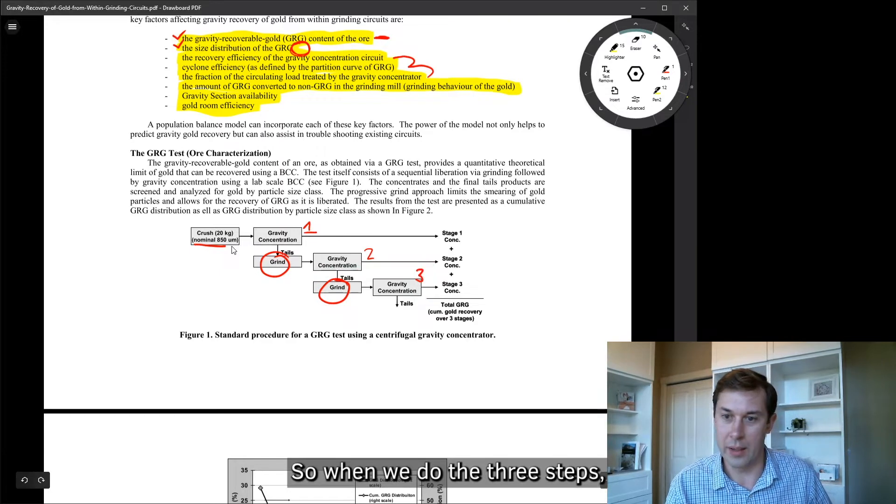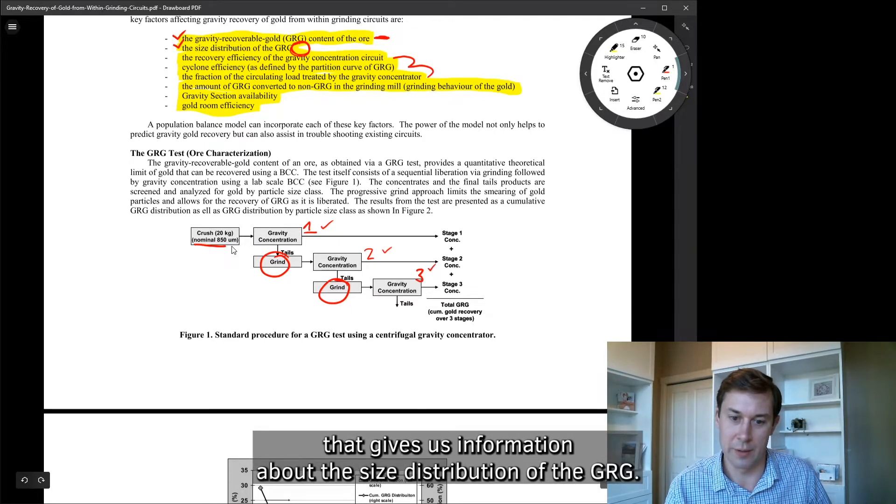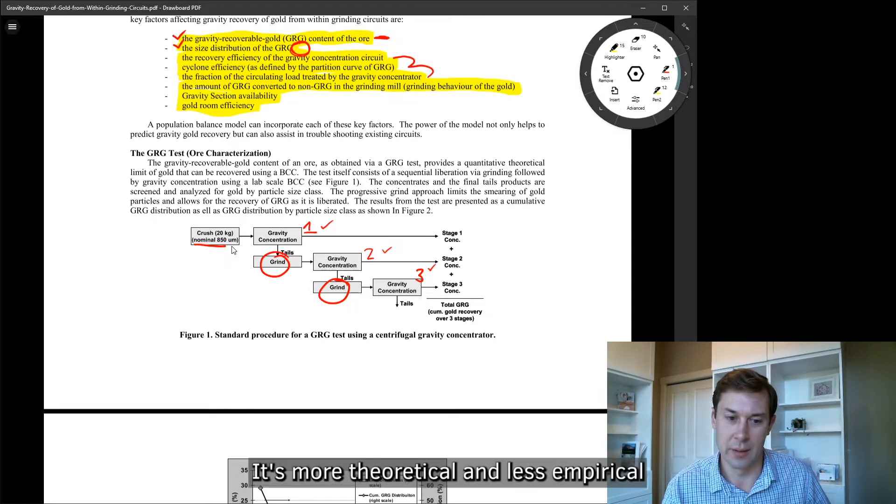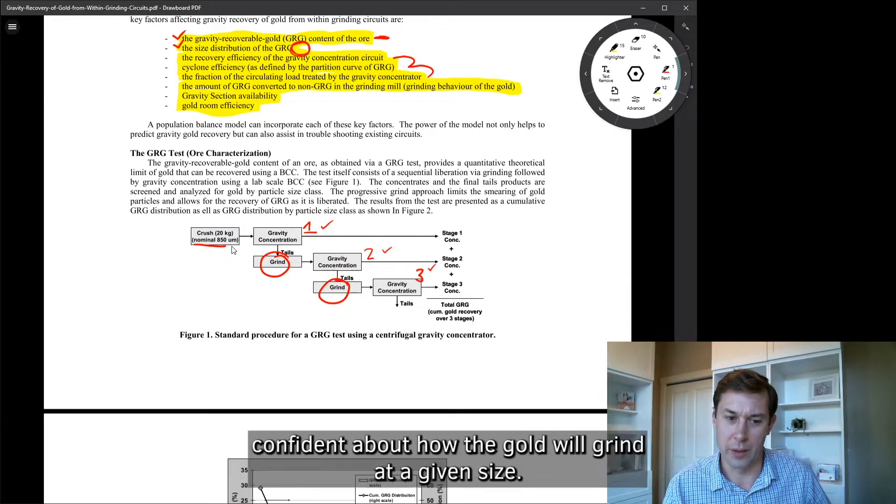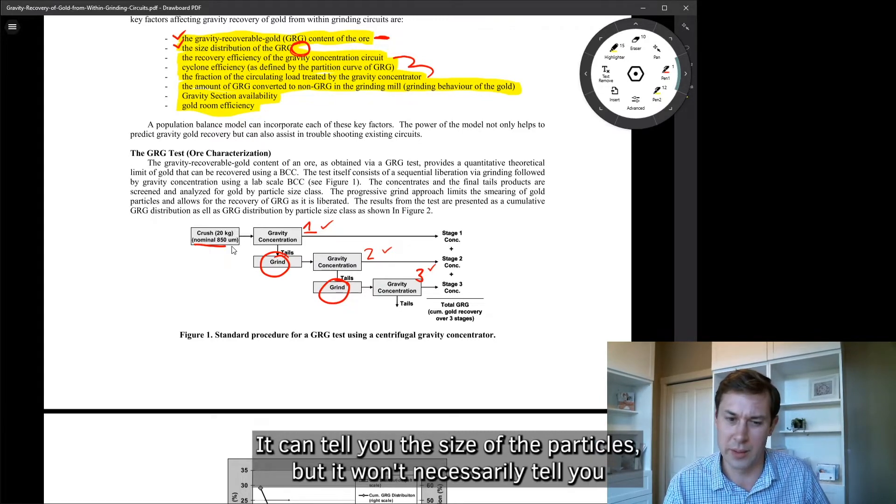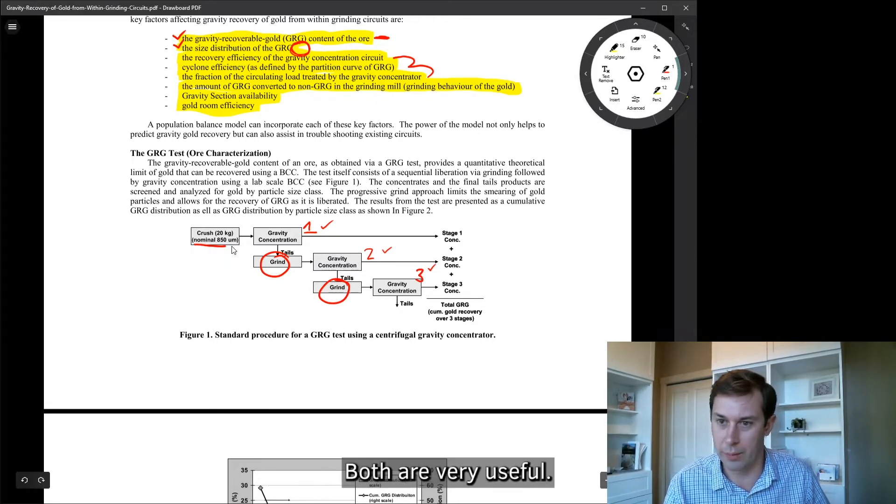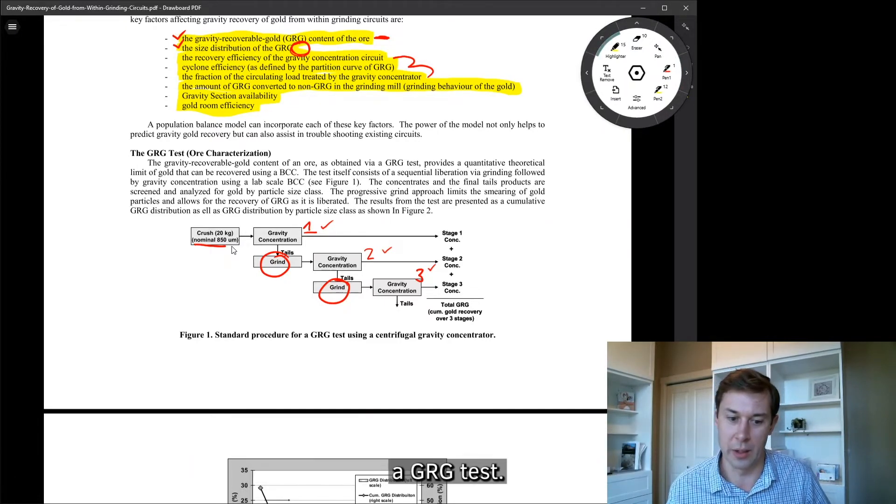So when we do the three steps, we actually build a release curve that gives us information about the size distribution of the GRG. This can also be done with mineralogy, a mineralogical study. It's more theoretical and less empirical because, you know, you can't always be 100% confident about how the gold will grind at a given size. It can tell you the size of the particles, but it won't necessarily tell you whether or not they're actually going to get released and separated at these various size ranges. Both are very useful, but ultimately, if we're trying to predict gravity recovery, we want to be doing a GRG test.